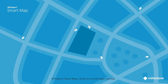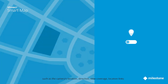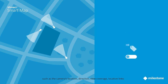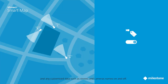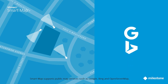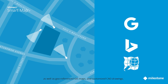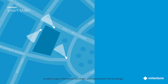X-Protect Smart Map is built on a multi-layer concept, which means operators can turn different information layers — such as the camera's location, direction, view coverage, location links, and any customized data such as streets and camera names — on and off. Smart Map supports public map services such as Google, Bing, and OpenStreetMap, as well as geo-referenced GIS maps and customized CAD drawings.